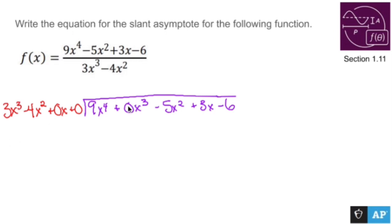3x cubed times what gets me 9x to the fourth? Well, 3 times 3 is 9 and x cubed times x is x to the fourth. Take that number and multiply it to the entire factor. 3x times 3x cubed is 9x to the fourth. This will always be the same unless you did something wrong.